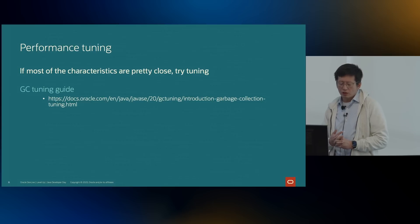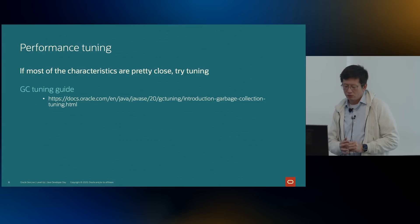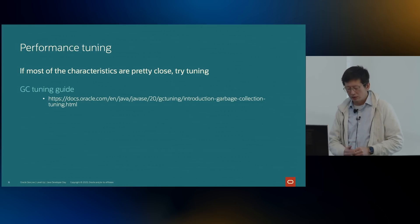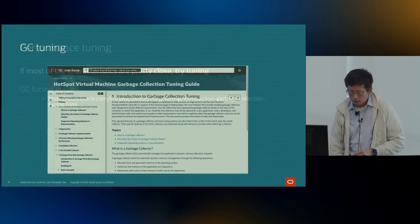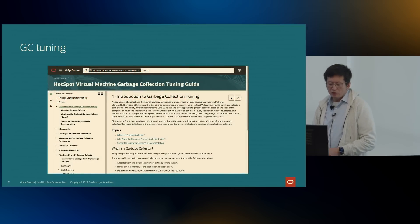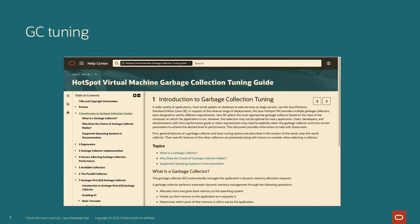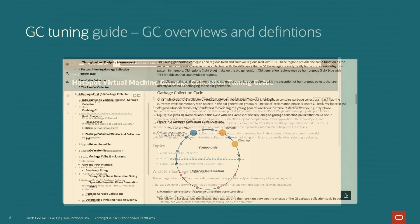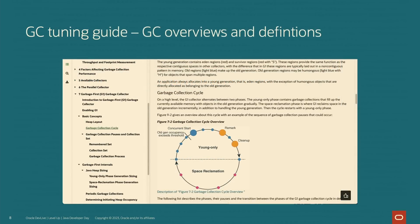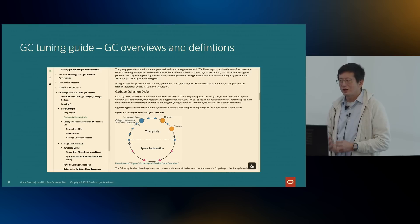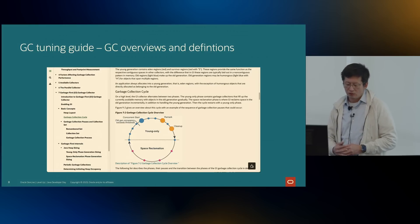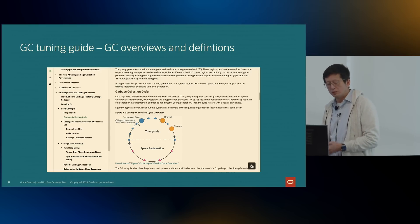The Hotspot garbage collection team maintains a GC tuning guide, which is updated with each JDK release. In it, you can find advice on how to set the Java Virtual Machine settings to adjust various performance characteristics. The guide also contains in-depth explanations on how the GCs work, as well as useful definitions of terms you may encounter when discussing garbage collection — for instance, regions, remembered sets, et cetera.